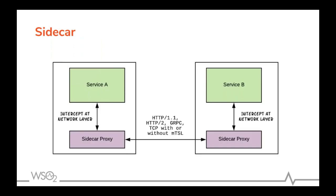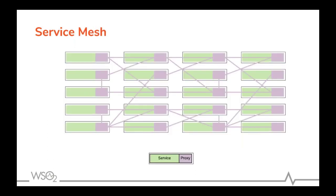When you deploy your service into a service mesh, it will be attached to a service proxy as a sidecar. Message interception is handled using IP table rules, and the actual service does not need to know about the sidecar's existence. Because of that, service developers can carry out their development independently from the deployment, creating a well-controlled service mesh that handles all service-to-service communication without interrupting normal service development.